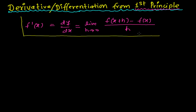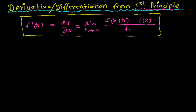If you find the derivative of a function by using this formula or by this method, then that method of finding the derivative is called the first principle. Or you are finding the derivative from the first principle method. Some people also call it the delta method, or some people call it the ab initio method. But first principle is much more famous — it's the same thing we had done in the previous second presentation of derivative.